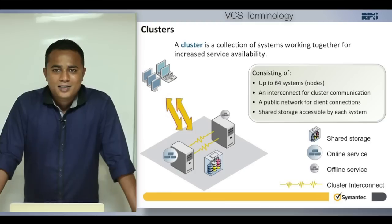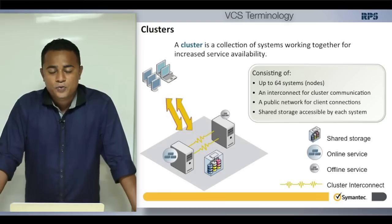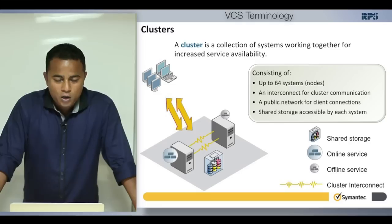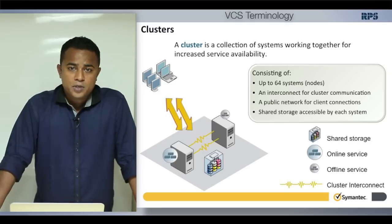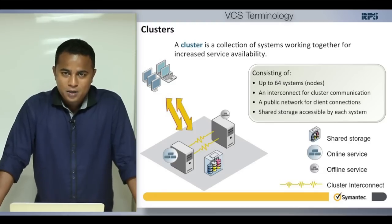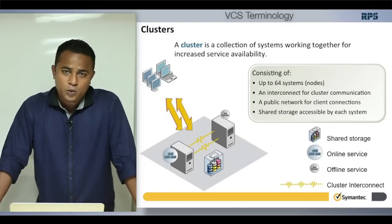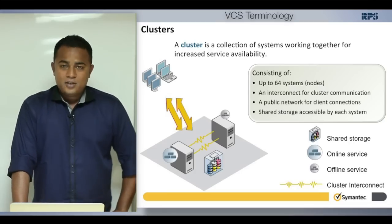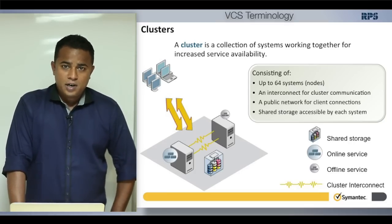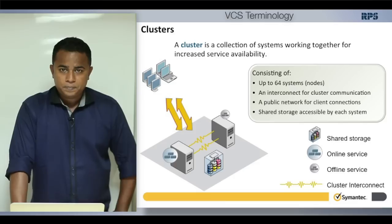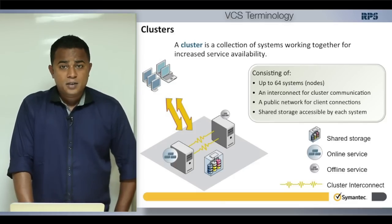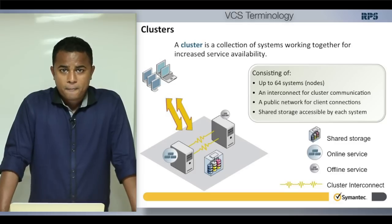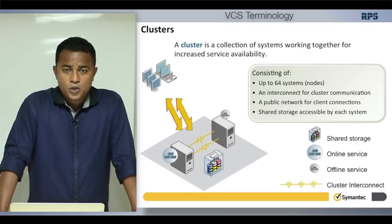A cluster is a collection of systems used for high availability and business continuity, so that even if your service goes down on one machine it remains available. A cluster can consist of up to 64 nodes. A cluster interconnect is required for cluster communication — for heartbeat and configuration syncing — which is also called a private network.